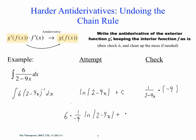Now we're ready to check it again by taking the derivative of that. If you take the derivative, do you get exactly what we started with? Yes, you do. If you're not convinced, do it. So now we can just simplify this: it's negative 2/3 natural log |2 minus 9x|.